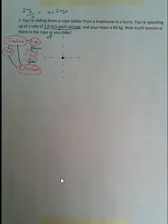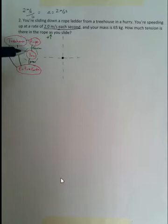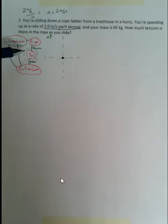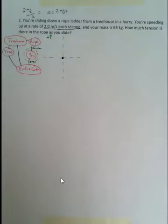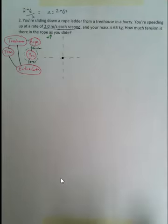You have a mass of 65 kilograms, and we want to find how much tension is in the rope as you slide down. I made an interaction diagram — there's a tree house, a rope, a tree, you, and the entire earth. Since the question asks about tension in the rope, you might first try to make the rope the system, but you quickly discover you don't have enough information: you don't know the mass of the rope or details about its interaction with the tree house.